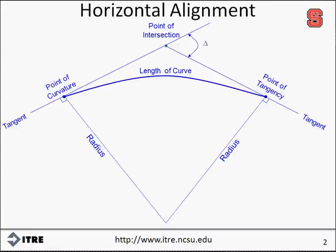Geometric relationships and equations can be used to find important information for each curve. This information includes the radius, the length of the curve, the change in direction of the two tangents, and other factors depending on your needs.